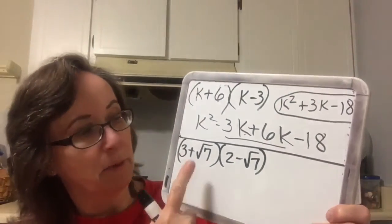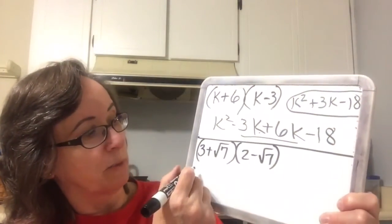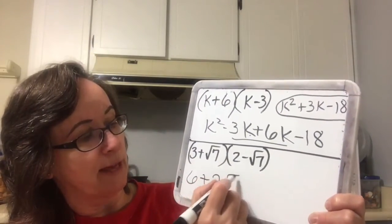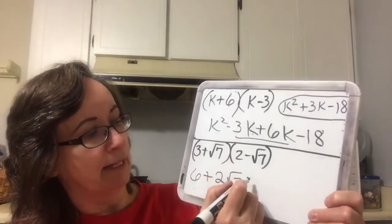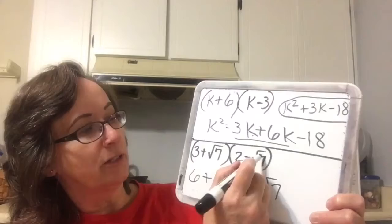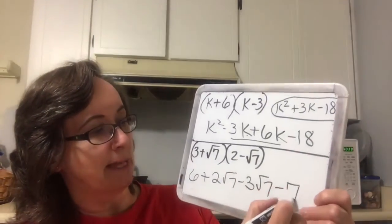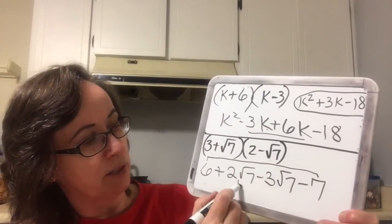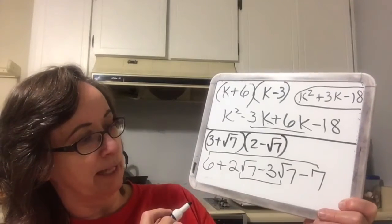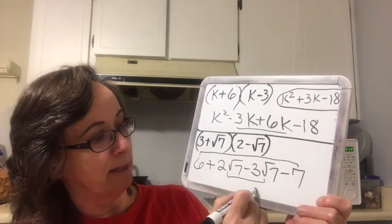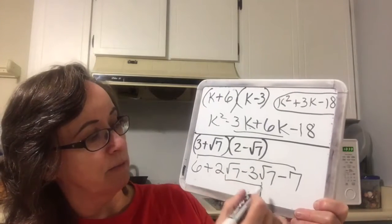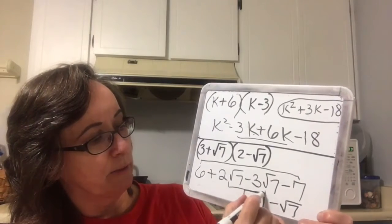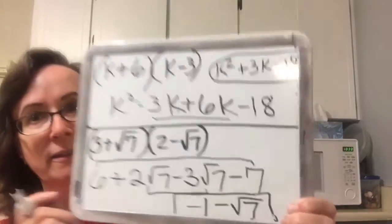Now we're FOILing but we have a radical. The first term is 6. The inside is 2 square root of 7. The outside is negative 3 square root of 7. And the two last multiplied together give negative 7. The square root of 7 terms go together: 2 minus 3 is negative 1 square root of 7. And 6 minus 7 is negative 1. So the answer is negative 1 minus square root of 7.